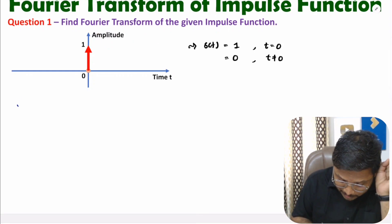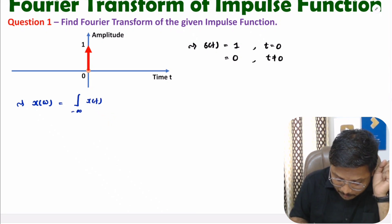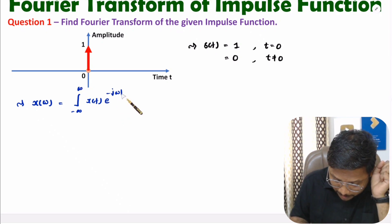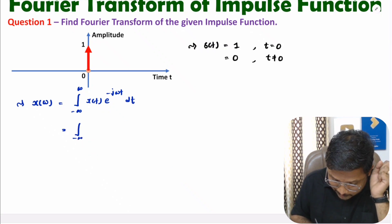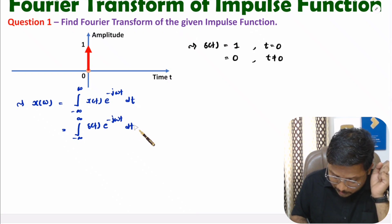For this impulse, I will derive the Fourier transform. One should know the basic definition of the Fourier transform: X of omega of x(t) equals the integral with limits from minus infinity to plus infinity of e to the power minus j omega t dt. Here, x(t) is the impulse signal delta of t.